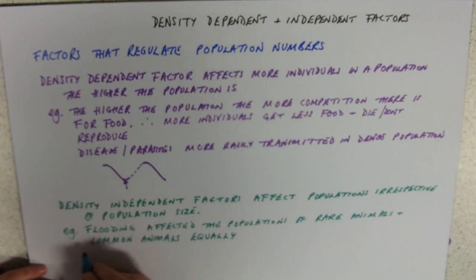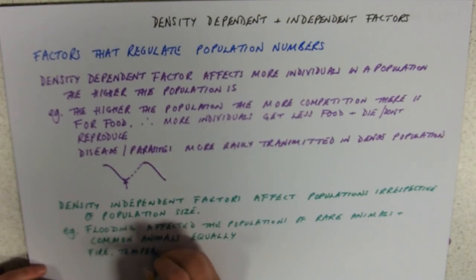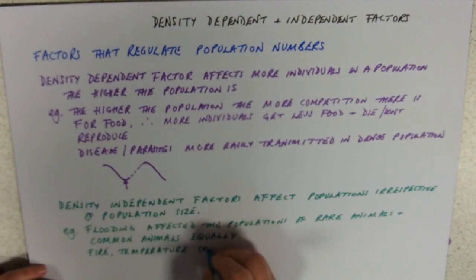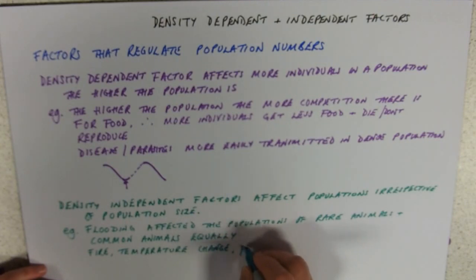So things that can affect populations like that: flooding obviously, forest fires, dramatic temperature decreases or changes can affect population, might be a pH change, pollution event like an oil spill.